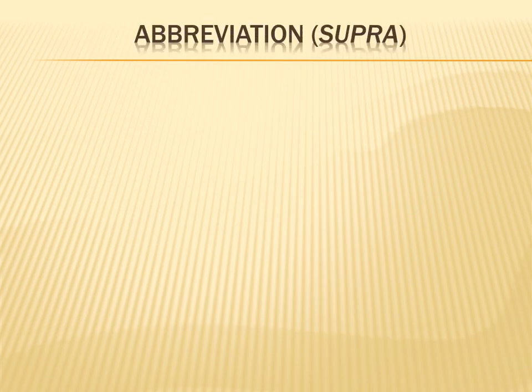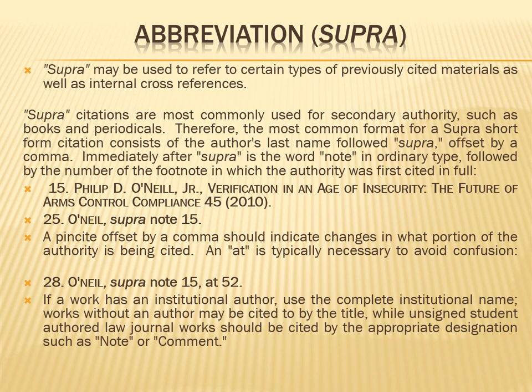The next abbreviation is 'supra.' Supra is again citing a previously cited footnote or material. The difference is: if there is a 15th citation in which a particular source has been used, and in the 25th citation you want to use it again, you write the name of the author and then 'supra note 15' — meaning after 10 footnotes you are again using the same footnote mentioned at number 15. If in your 28th citation you refer to supra note 15 but with a different page number, you write the name of the author, then 'supra note 15 at 52.'